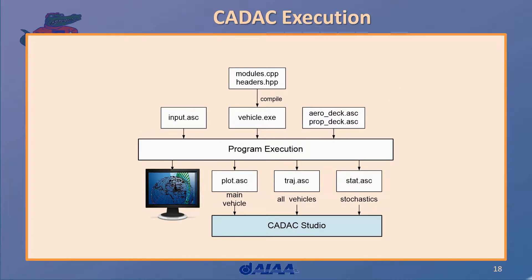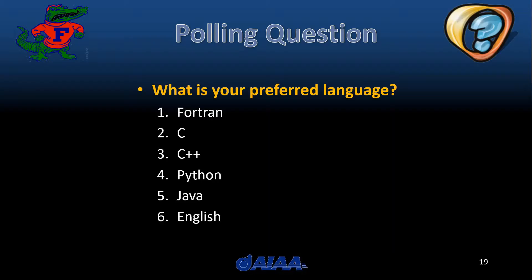When you execute CADEC, inputs come from an input file (input.asc) that initiates the run and sets variables. The modules are code and header files compiled into an executable. Additional input files such as aero decks and propulsion decks are provided. The program outputs to screen, plot files, trad files, and statistical files — all of which can be processed and displayed in CADEC Studio.